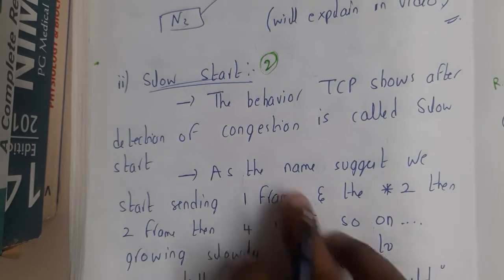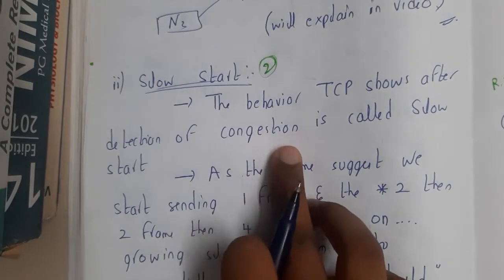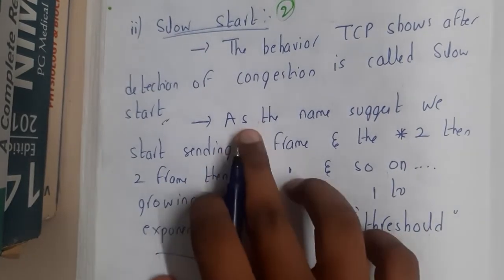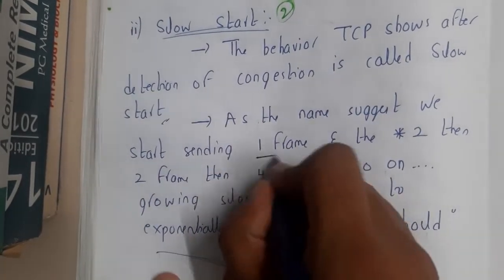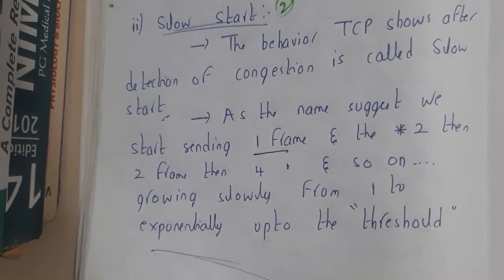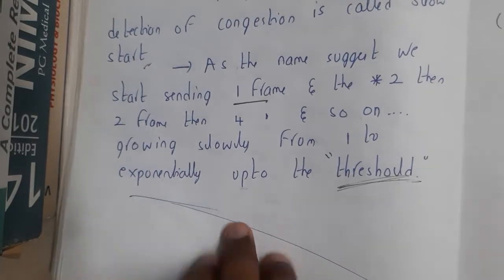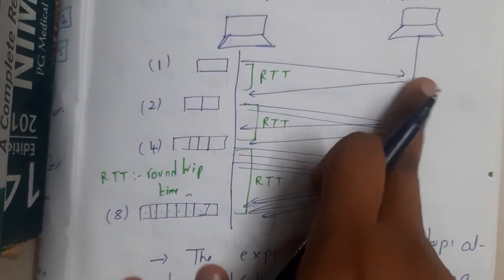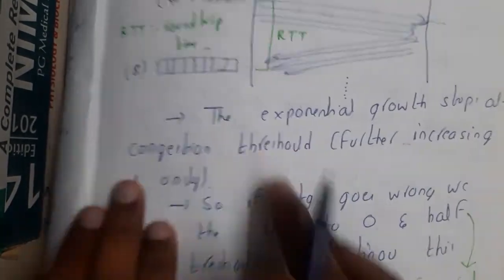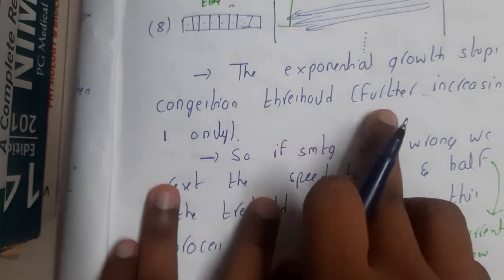The behavior of TCP after detection of congestion is called slow start. After detection you restart the slow start process. As the name suggests, you start sending one frame, then multiply by 2: 1, 2, 4, 8, 16, 32, continuing to multiply by 2 until reaching the threshold. The exponential growth stops at the congestion threshold.